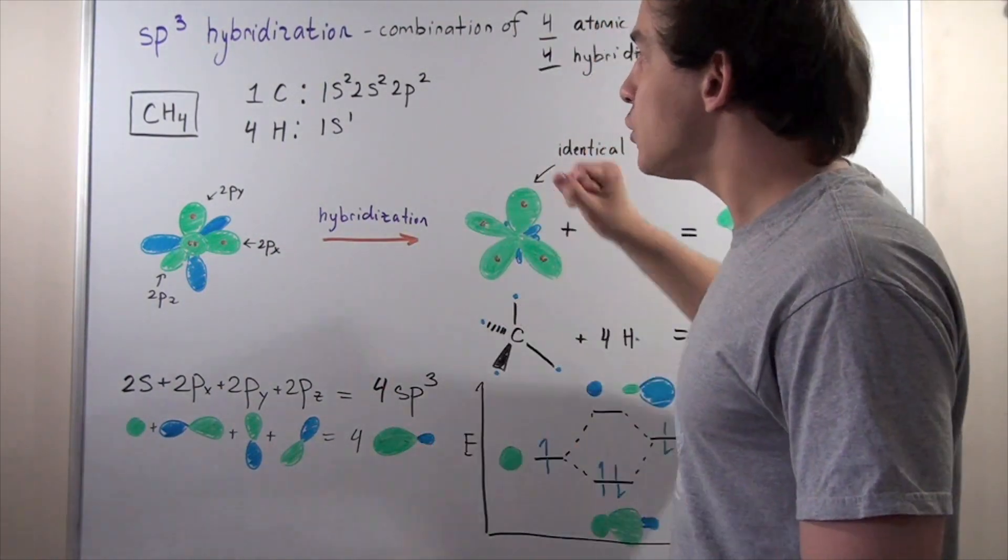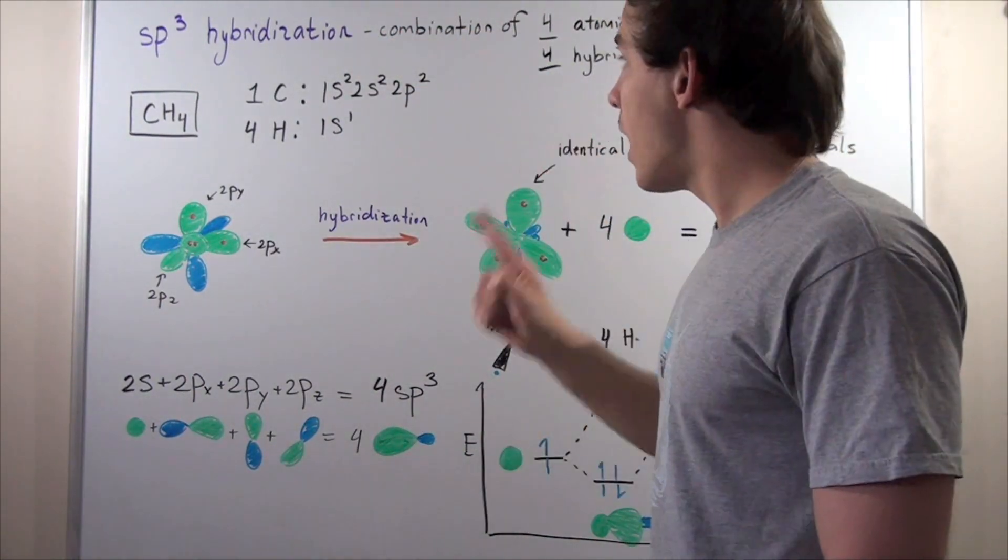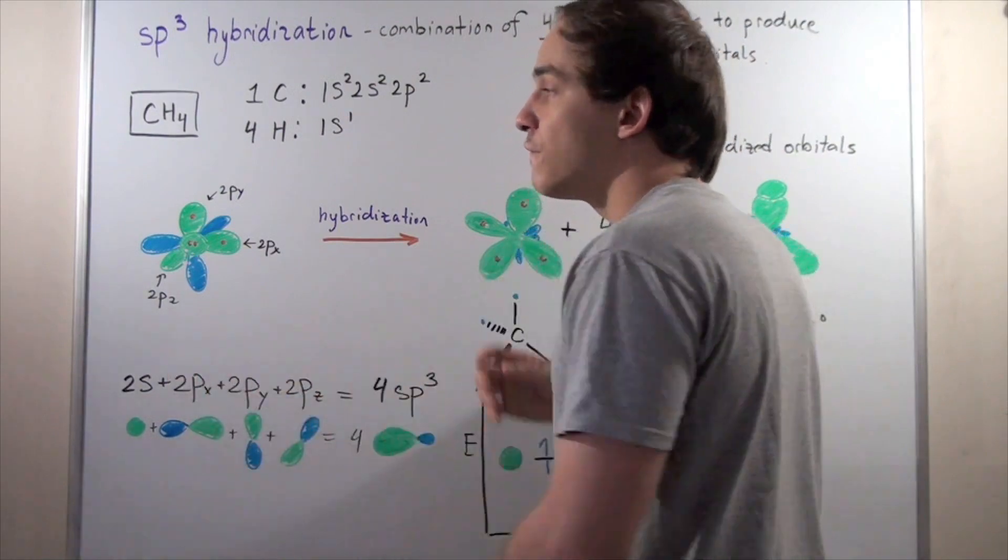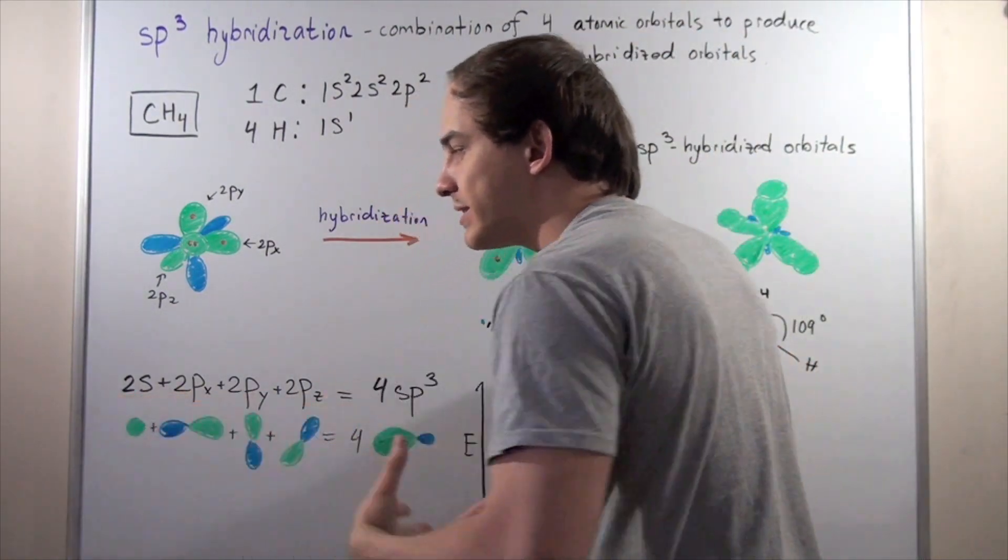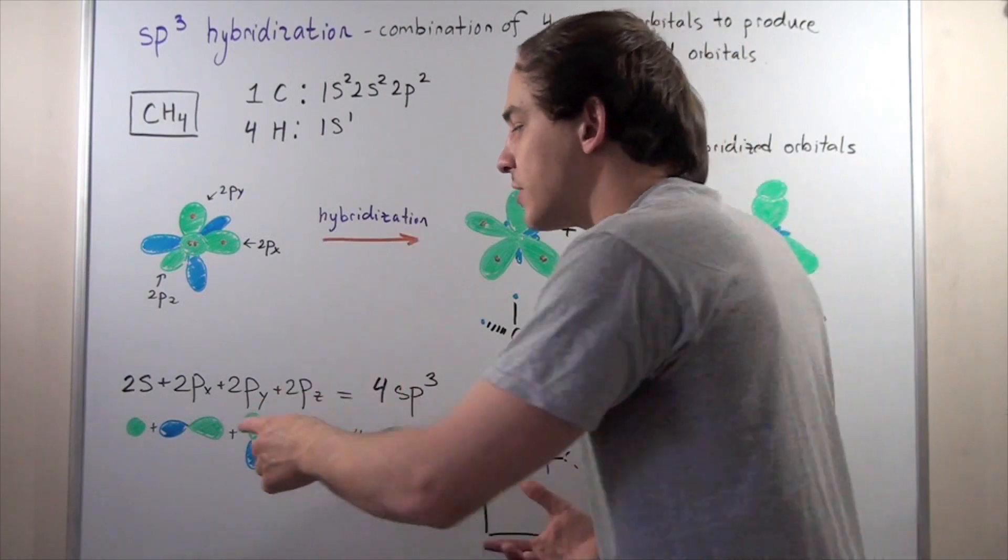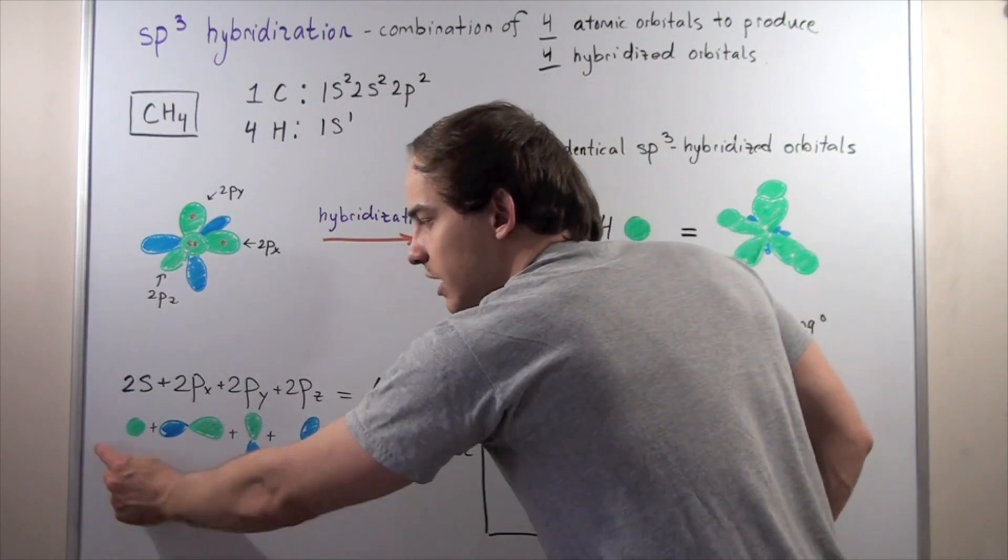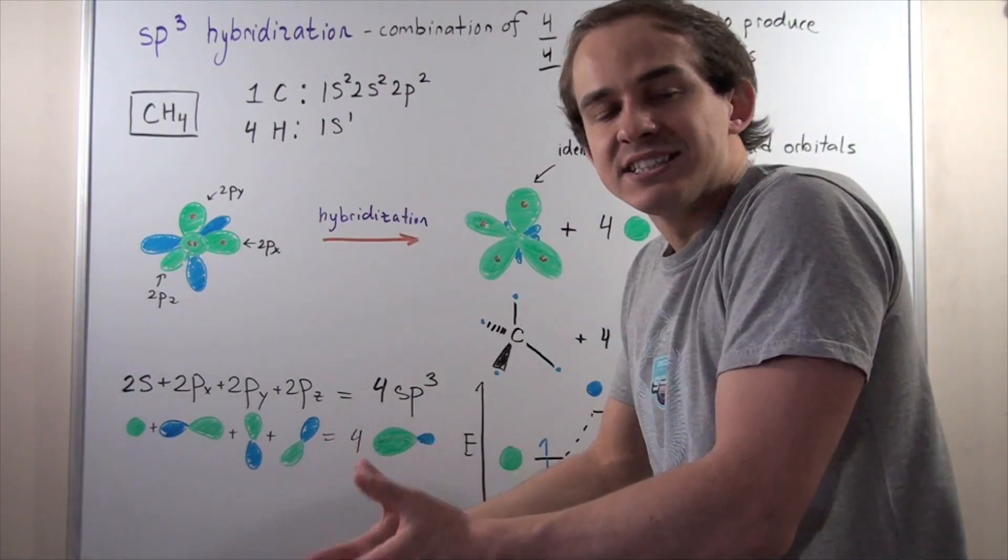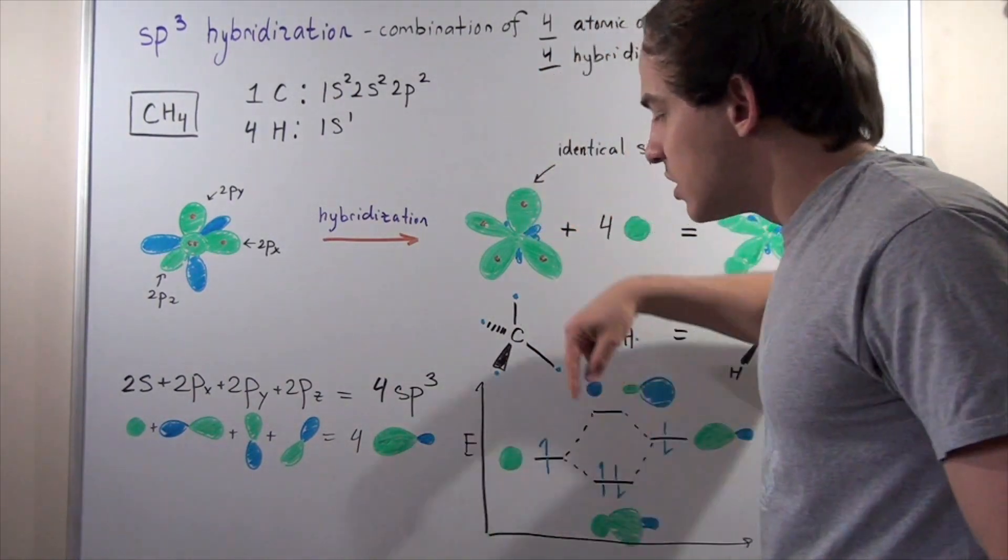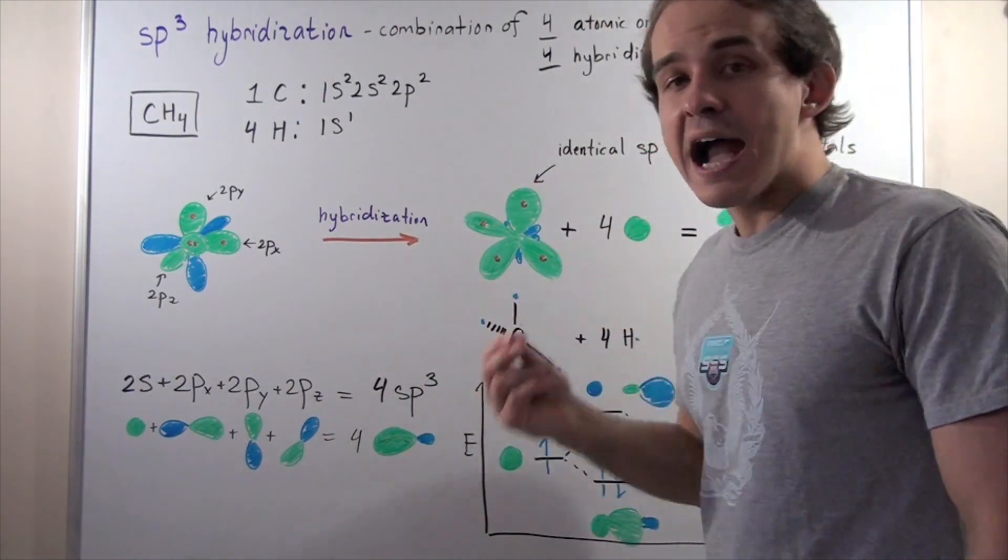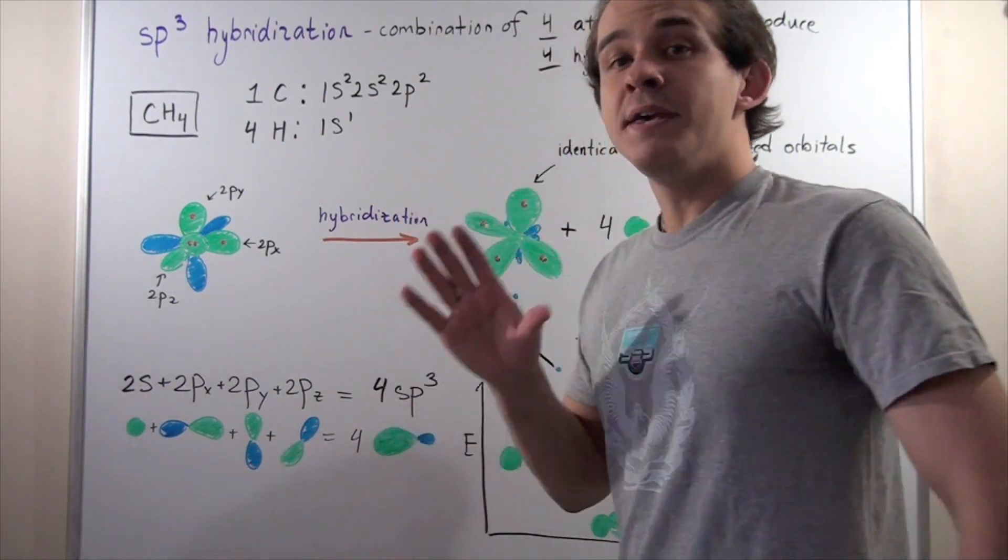That means we have to use the 2s and all the 2px, 2py, and 2pz to form our four hybrid orbitals. For hybridization to take place, the 2s must combine with the 2px, that must combine with the 2py and the 2pz. If we combine all these four atomic orbitals, we will get four hybrid orbitals that are all identical. We get four sp3 hybrid orbitals, in which we have 25% s character and 75% p character.